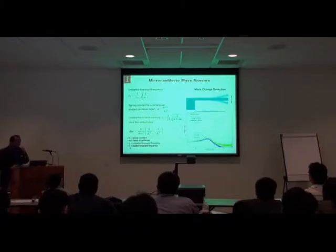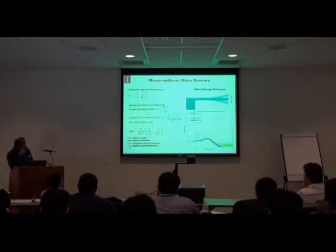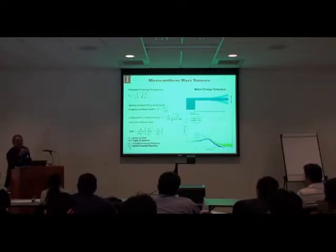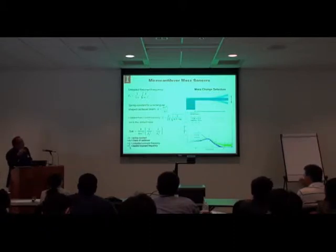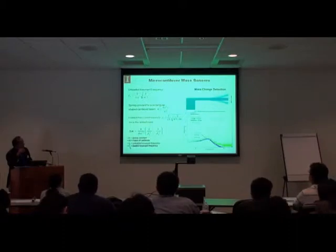Let's talk about the mechanical sensors. One type you can make is a resonant sensor, where the idea is that everything around us has a natural resonant frequency — everything is vibrating at some scale. If you can make a cantilever — a rectangular cantilever — this is the spring constant, which is a function of Young's modulus, thickness, width, and length.